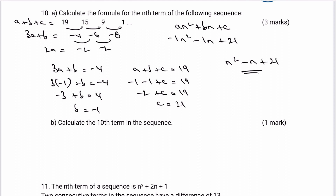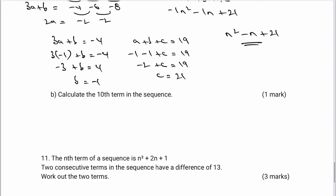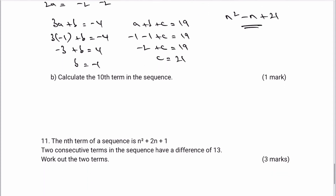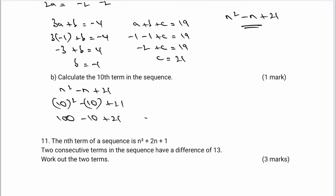Part b asks for the 10th term. Substituting into minus n squared minus n plus 21: 10 squared minus 10 plus 21 equals 100 minus 10 plus 21, giving a value of minus 89. That would be the answer to part b.